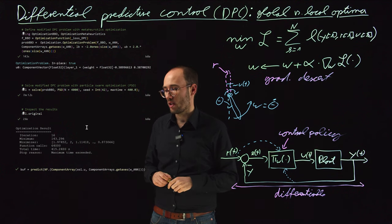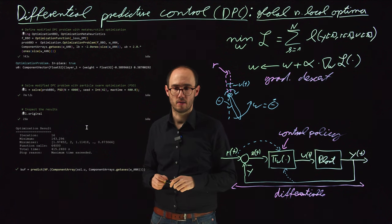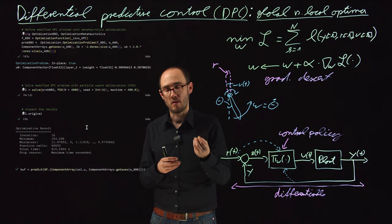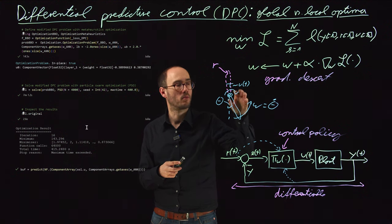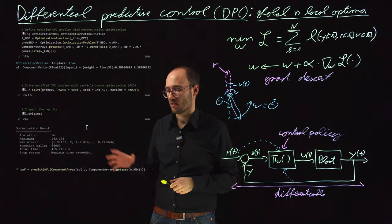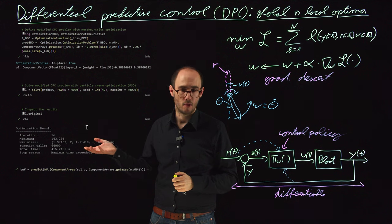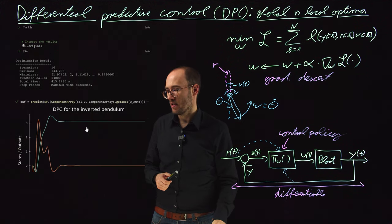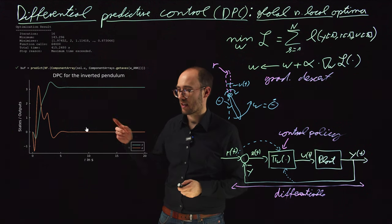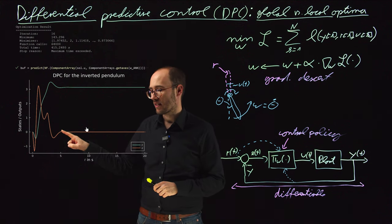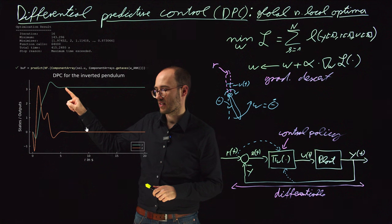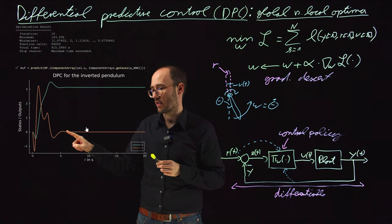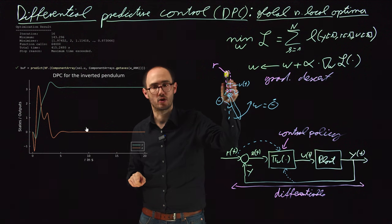The rationale behind using PSO is to scan the parameter space for initial parameter sets much closer to the true global optimum than a random ANN initialization. Taking the best result from PSO, we can see a much better outcome: after roughly five to six seconds, theta reaches pi — the upper equilibrium — and the pendulum speed is roughly zero, meaning the swing-up was successful.